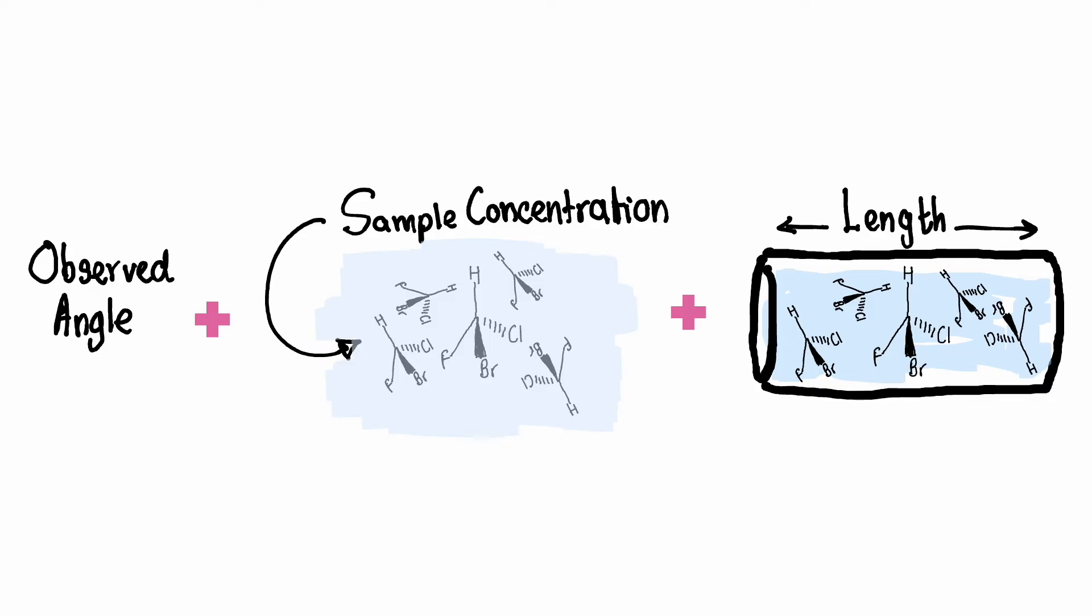The observed angle along with the concentration of the sample and the length of the sample cell is used to calculate the specific rotation of a chiral substance.